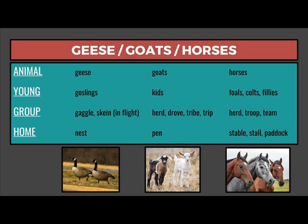The young of geese are goslings. A group of geese would be a gaggle — especially if they're on land or in water — but a skein if they're in flight. The home of geese would be a nest. The young of goats are kids. A group of goats is a herd, drove, tribe, or trip, and the home of a goat is a pen.